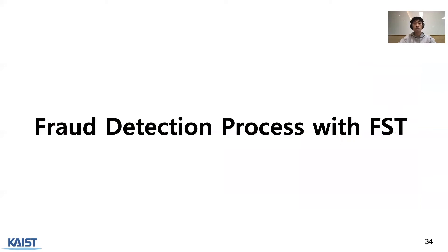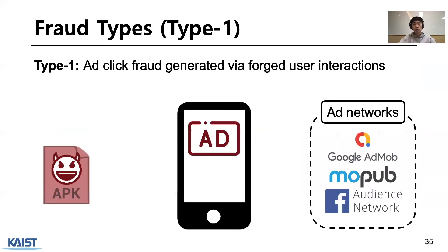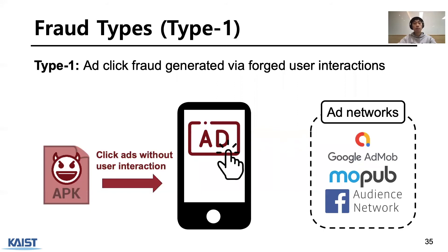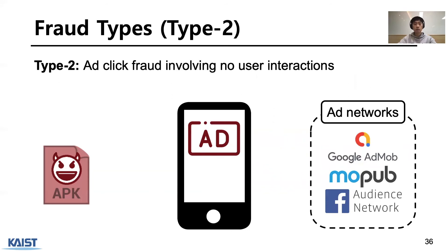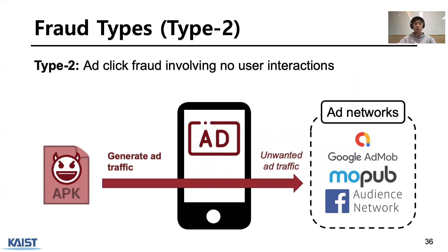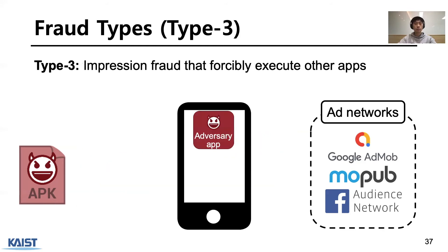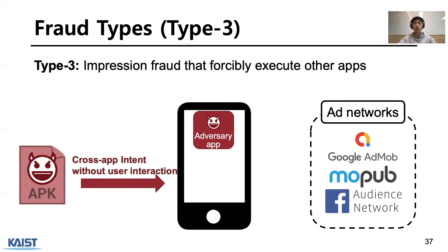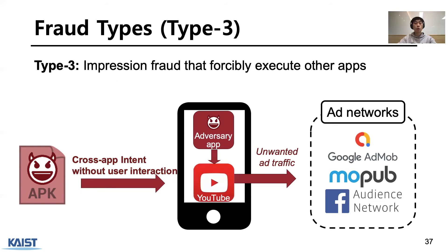I'll explain how to detect fraud using the full Stacktrace. Fraudetective can detect three fraud types. Type 1 Fraud: fraud code clicks on ads displayed in the app, and the clicked ad sends click URL requests to ad networks. Type 2 ad fraud: fraud code generates ad traffic sent directly to ad networks without any interaction. Type 3 ad fraud: fraud code invokes cross-app intents that bring third-party apps into the foreground without any interaction, where the third-party app is a target URL such as YouTube or web browsers.